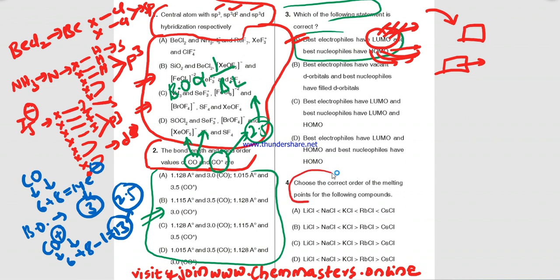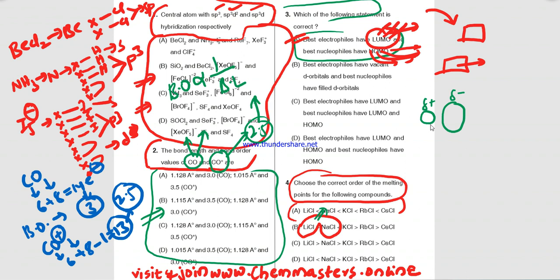The next question asks for the correct order of melting points for alkali metal chlorides. Looking at lithium chloride and NaCl, we need to apply Fajans' rules and consider polarization of bonds. According to Fajans' rule, if the cation is small and the anion is large, polarization occurs: the cation gains partial positive charge and the anion gains partial negative charge, leading to covalent character.